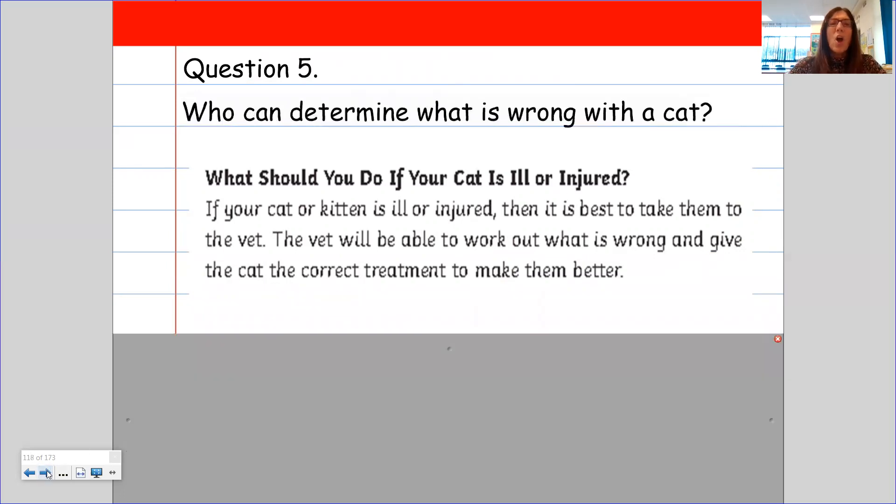Let's look at number five. Who can determine what is wrong with a cat? So I'm going to look at the section there that says, what should you do if your cat is ill or injured? And it says the vet will be able to work out what is wrong and give the cat the correct treatment. So my answer for that would be the vet.